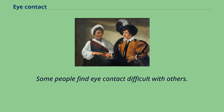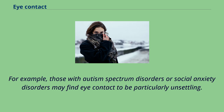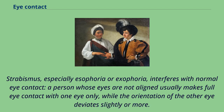Some people find eye contact difficult with others. For example, those with autism spectrum disorders or social anxiety disorders may find eye contact to be particularly unsettling. Strabismus, especially esophoria or exophoria, interferes with normal eye contact. A person whose eyes are not aligned usually makes full eye contact with one eye only, while the orientation of the other eye deviates slightly or more.